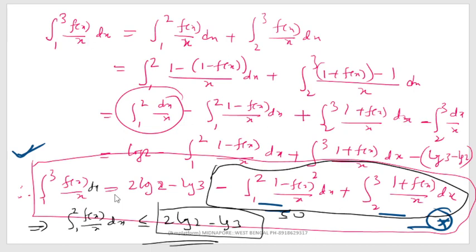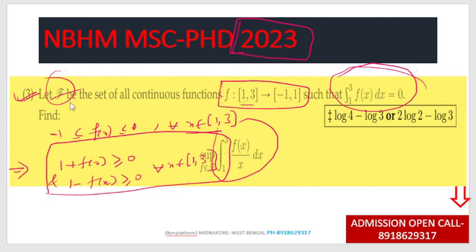The answer is 2 log 2 minus log 3. This is the supremum value, and the supremum of the integral from 1 to 3 of f(x)/x dx equals 2 log 2 minus log 3.